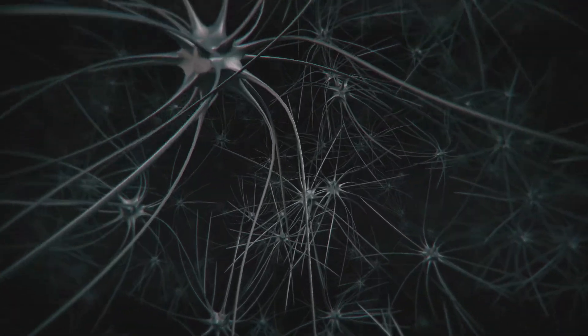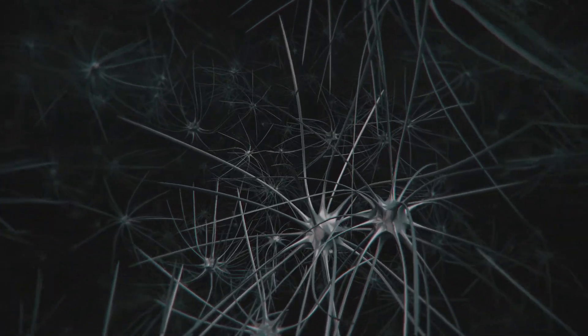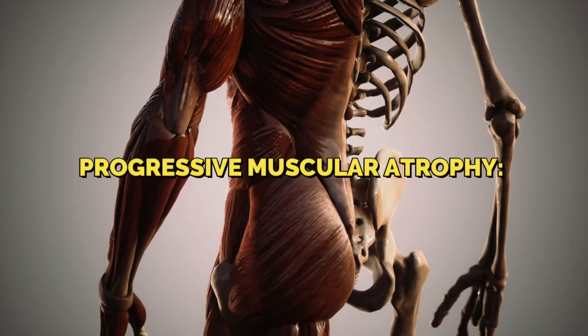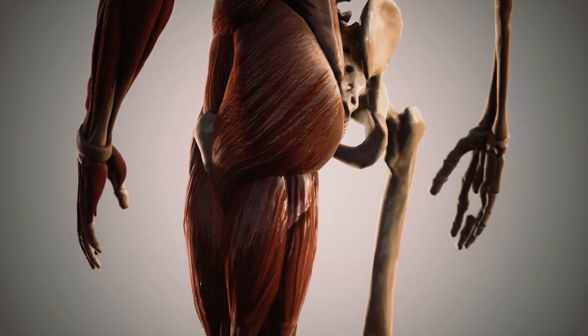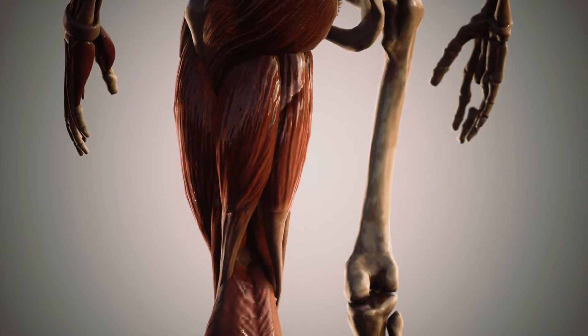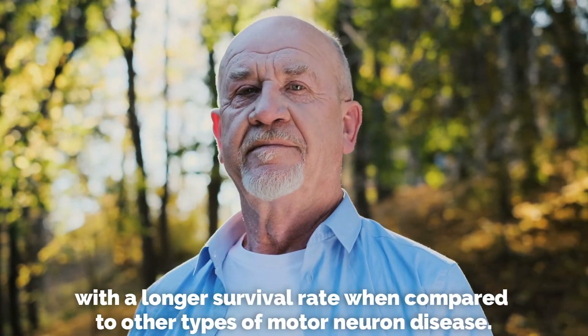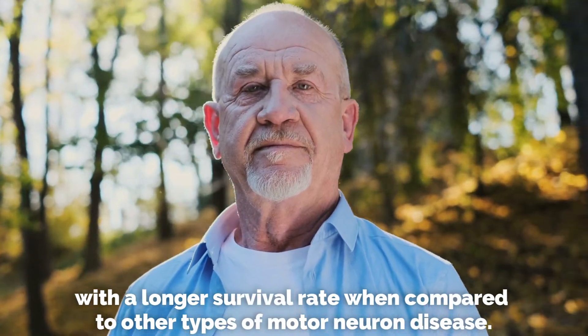Progressive muscular atrophy: This form of motor neuron disease mainly affects the lower motor neurons. This form of the disease progresses at a slower rate with a longer survival rate when compared to other types of motor neuron disease.